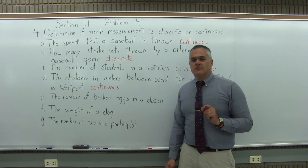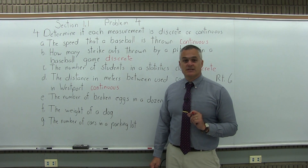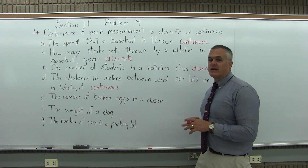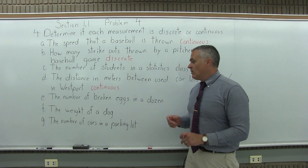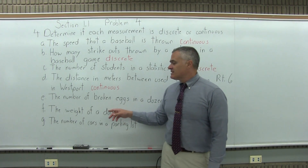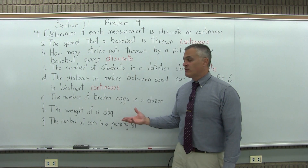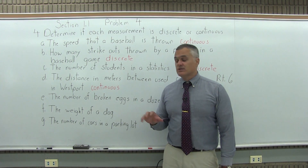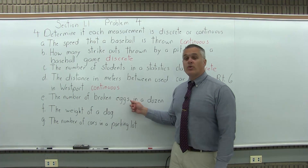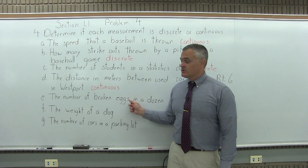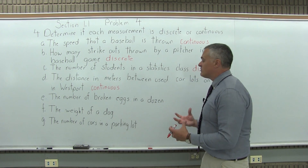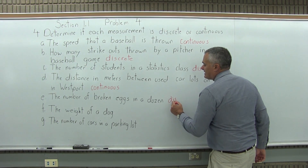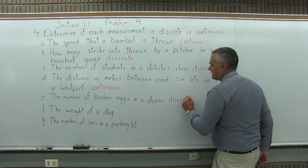Part E: the number of broken eggs in a dozen. Same question — can you get in between any two answers, or not? How many broken eggs might you have in a dozen? Let's say four — that's a possible number. You could have five broken eggs in a dozen, that's certainly possible. Could you have 4.8 broken eggs in a dozen? No. So there are certain number answers that are possible, and you can't get in between those. That makes the number of broken eggs in a dozen a discrete measurement.